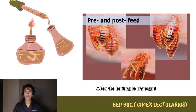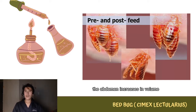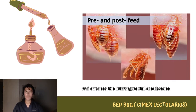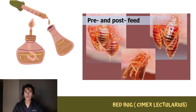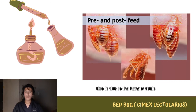When the bedbug is engorged, the abdomen increases in volume and exposes the intersegmental membranes, which are called the hunger folds, situated in the mid-ventral lines of segments 2 to 5. As you can see here in the picture, this is the hunger folds.